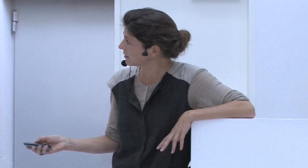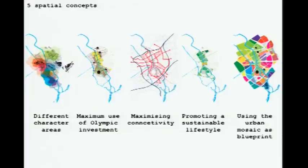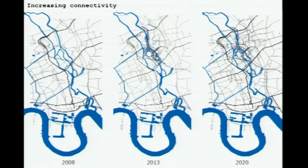There are five special aspects about this concept. On one hand, the different characters that we really focus on — different character areas — and we try to really improve different addresses, characters, and identities within the city. The maximal integration is very specific for this project of the Olympic investments and venues, a maximization of connectivity and accessibility of the different areas, promoting sustainable lifestyle and using this urban mosaic — this colorful set of different identities — as a base for urban planning. You can see an enormous increase of connectivity lines within this area.